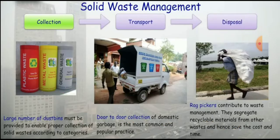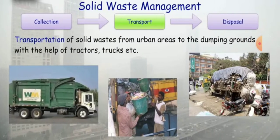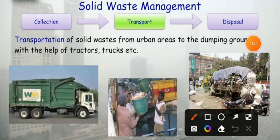Solid waste is transported from urban areas to dumping grounds with the help of tractors, trucks, and similar vehicles. You can see in the figure that different types of tractors and vehicles are used to collect and transport different types of waste.